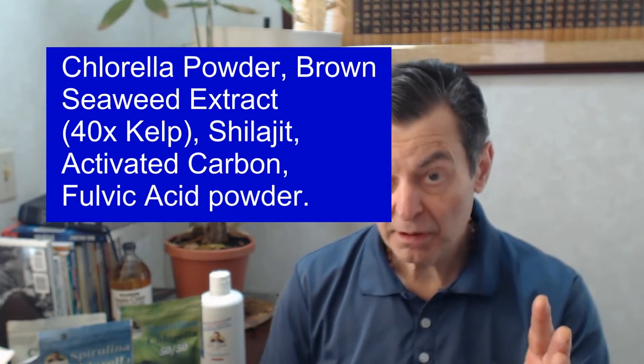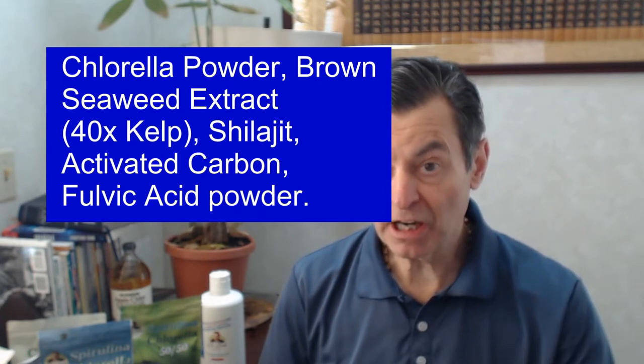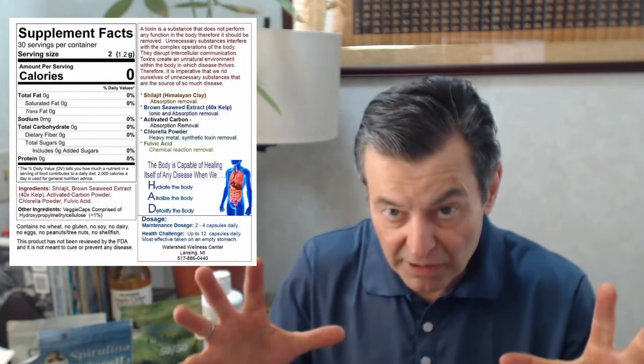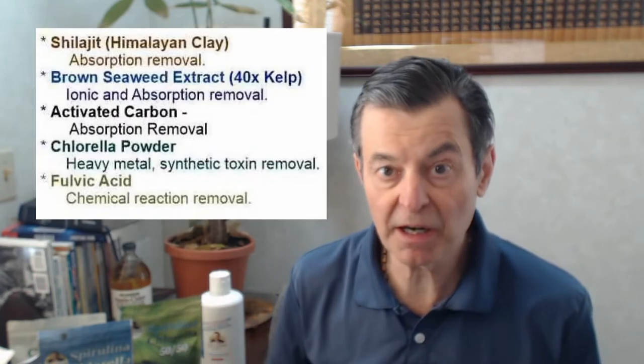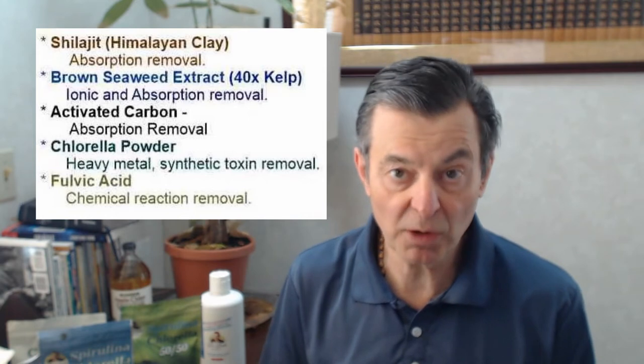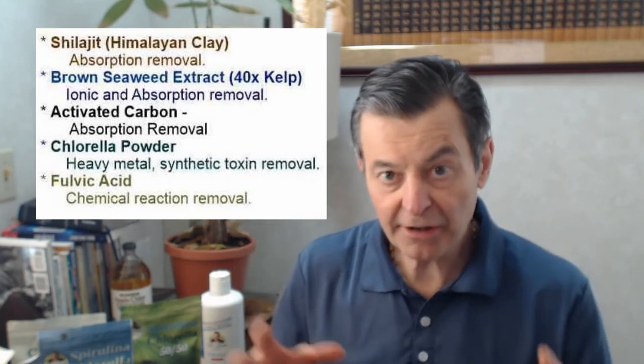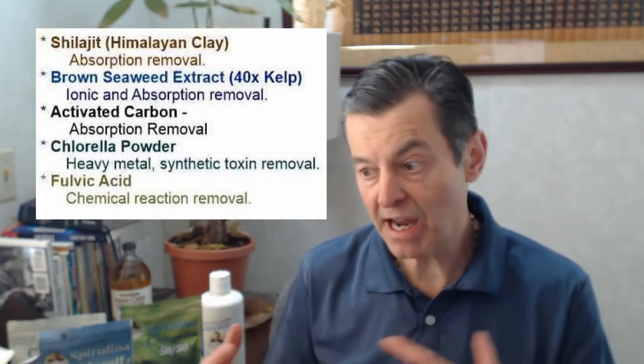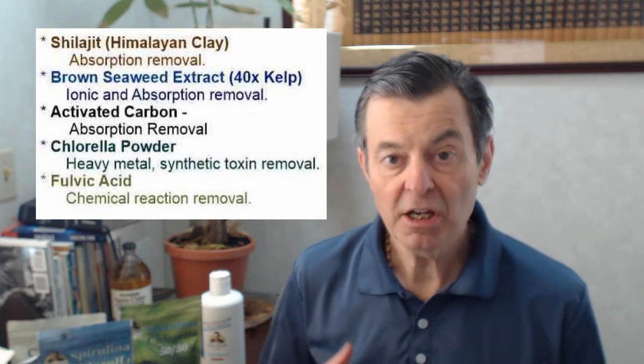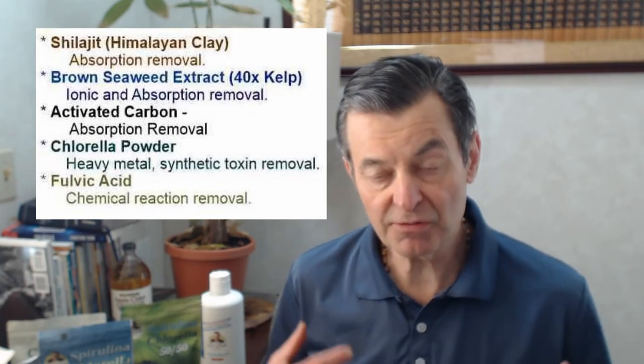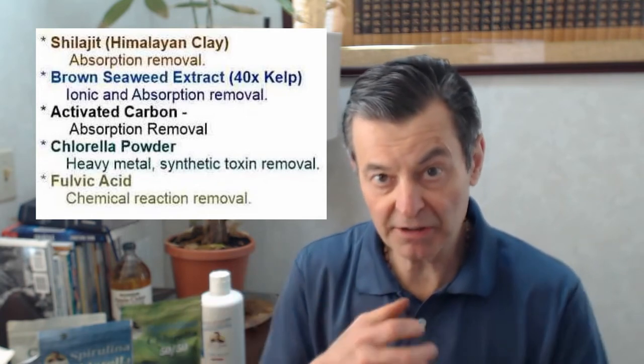Shilajit, carbon, and fulvic acid. Now all five of those are just meant to grab onto things and take them out of the body, and they all do it in a different way. So we're pulling out all these things from the digestive tract, from the blood. Eventually we've got to get things into the digestive tract so these things can actually grab onto them and bind with them and pull them out.